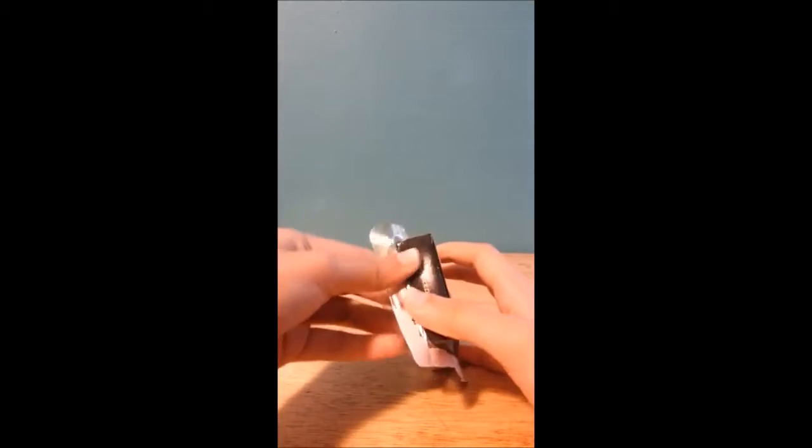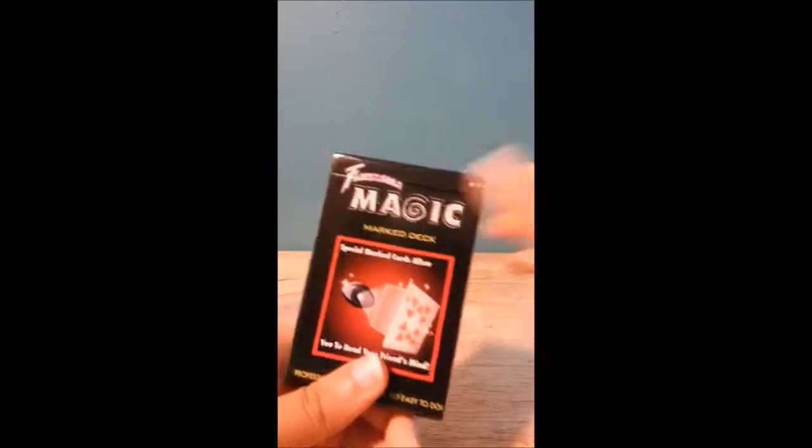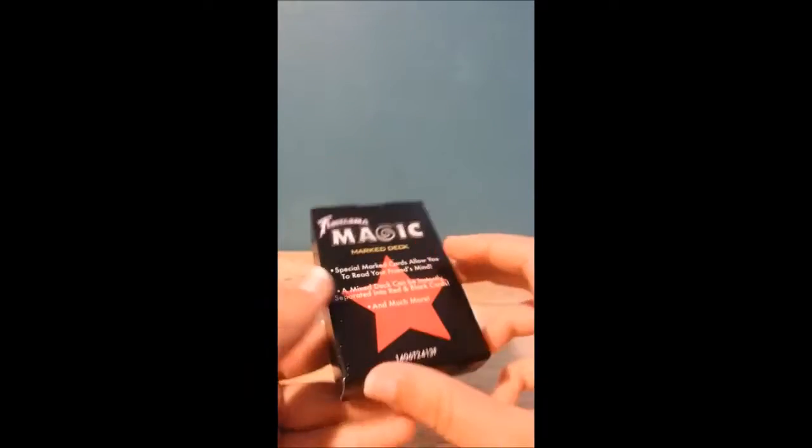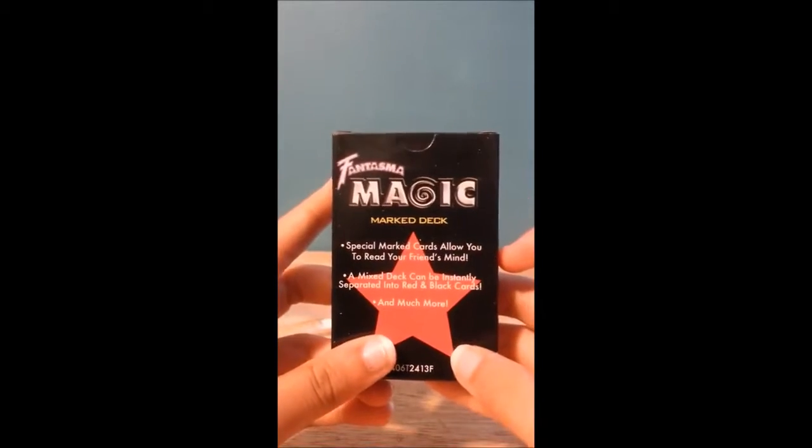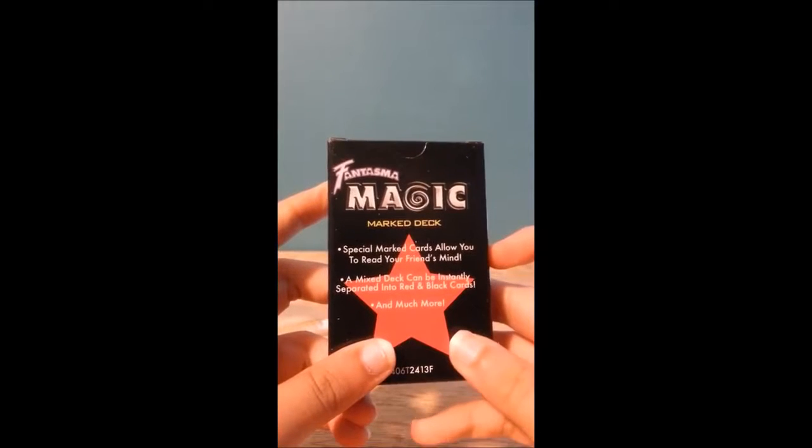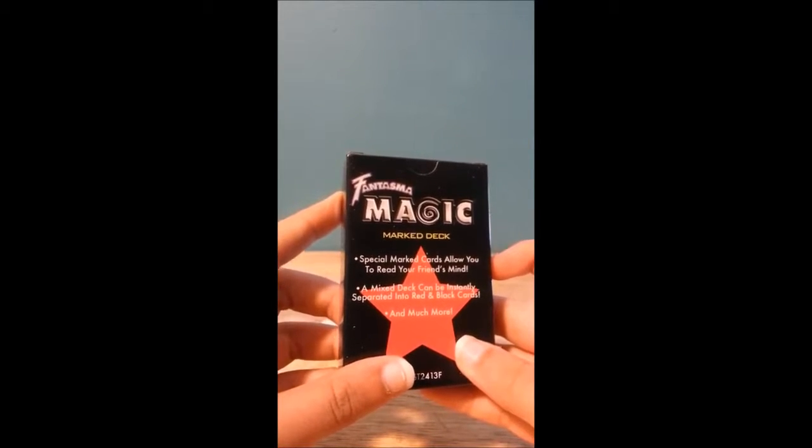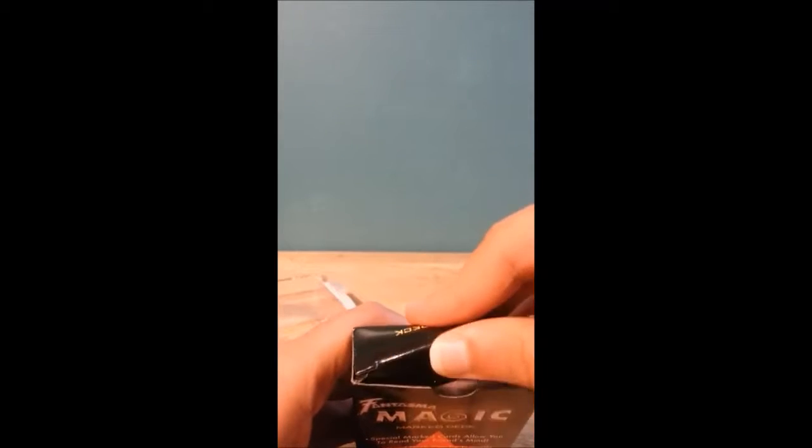Let's see, I really love this box, it looks super cool. It's for ages 6 and up. Special marked cards allow you to read your friend's mind. The deck can be instantly separated into red and black cards and much more.